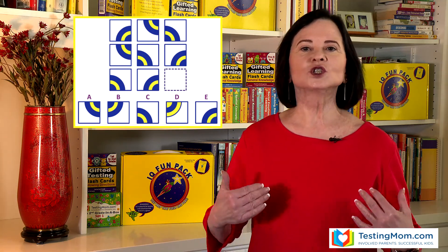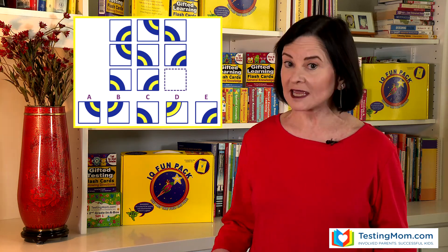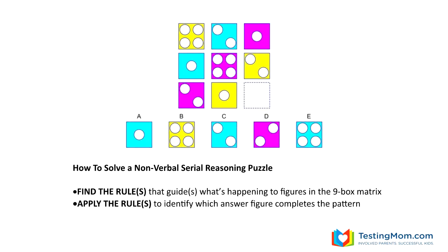Today I want to show you how to teach your child how to handle these questions. Here is how serial reasoning puzzles work. There's a nine-box matrix. The shapes or figures in the boxes create a pattern. One box will be empty and your child has to decide what shape or figure goes in the empty box to complete the pattern. Your child needs to identify the rule that guides what's happening to the shapes. Today I'm going to show you the different types of serial reasoning puzzles and the rules that guide them.